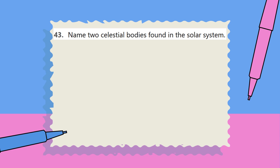Question 43: Name two celestial bodies found in the solar system. Question 44.